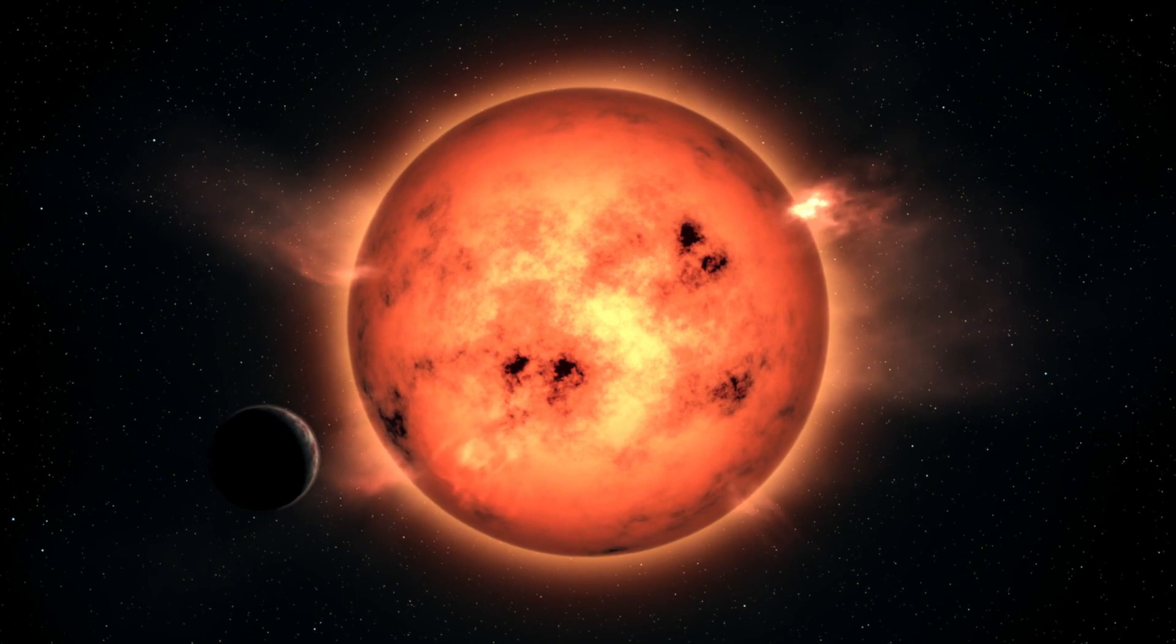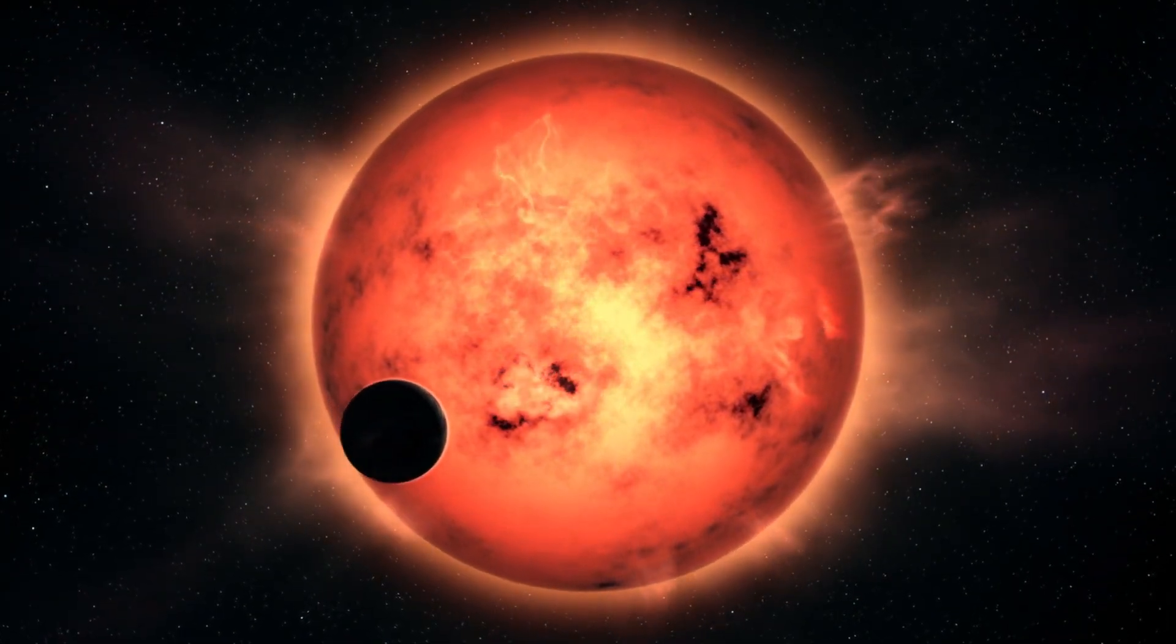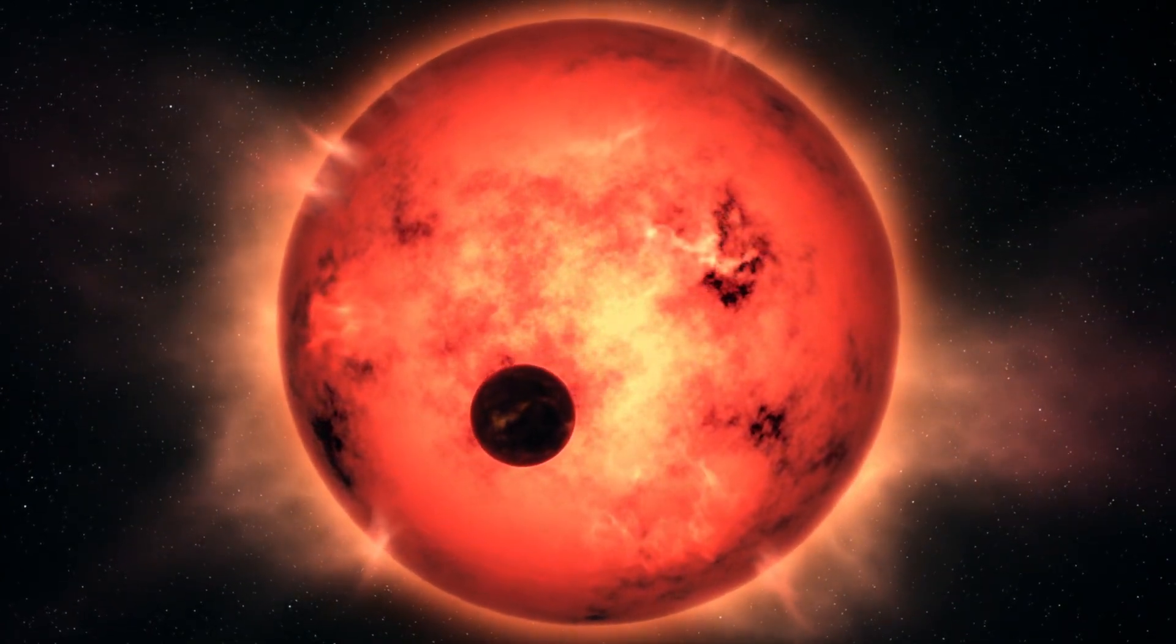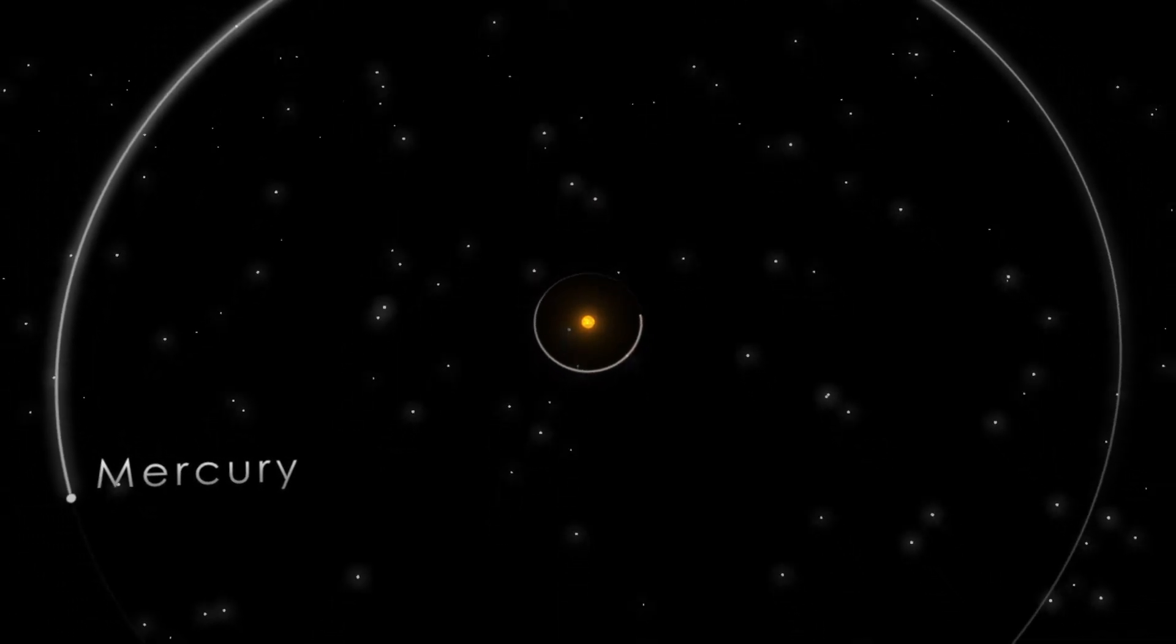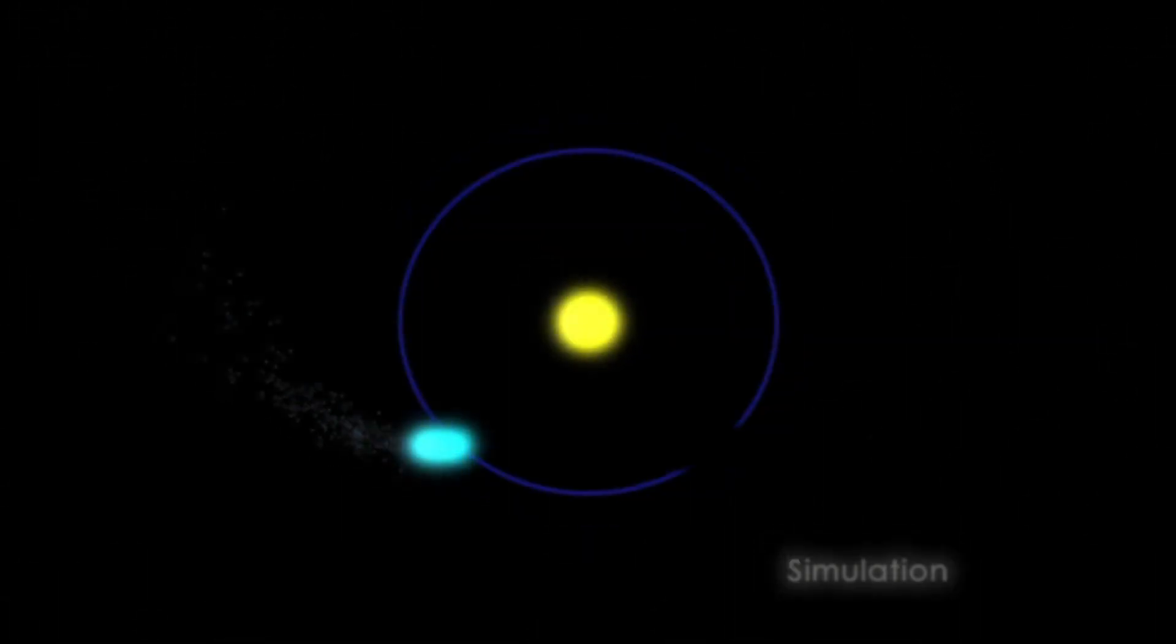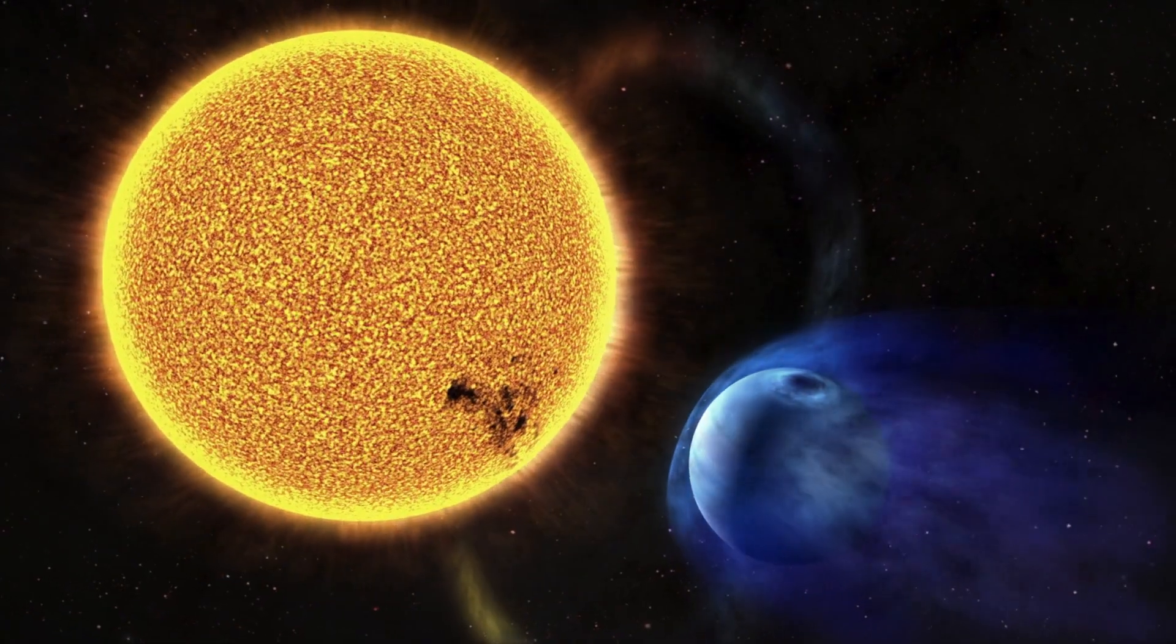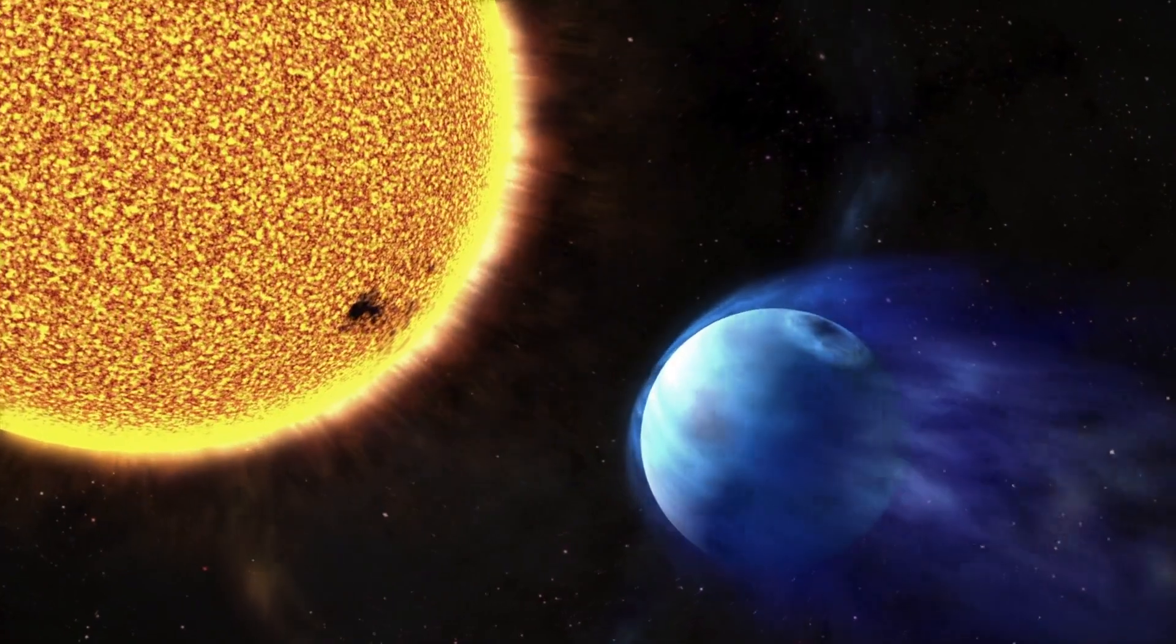Pegasus 51 has a planet. But no one has ever seen a world like this. It's half the mass of Jupiter. Yet it's extremely close to its star. Nine times closer than Mercury is to the sun. The planet at 51 Pegasus must be inside the corona, broiling in temperatures over a million degrees Fahrenheit.